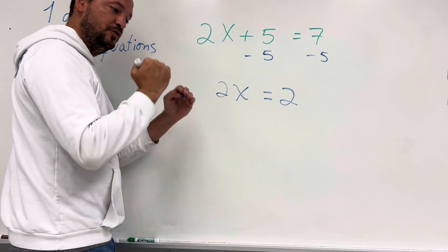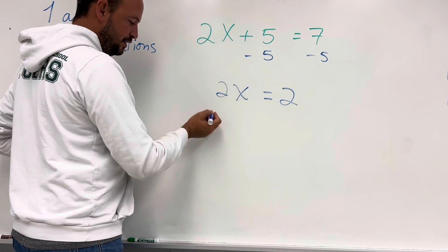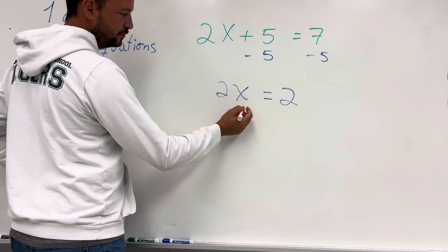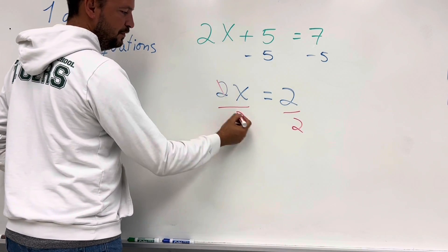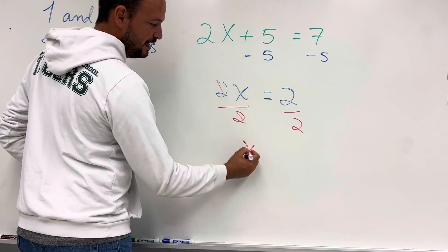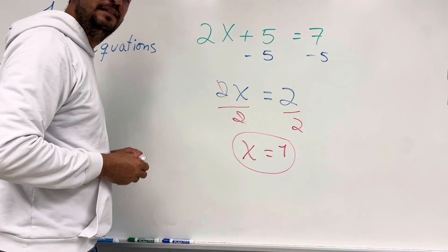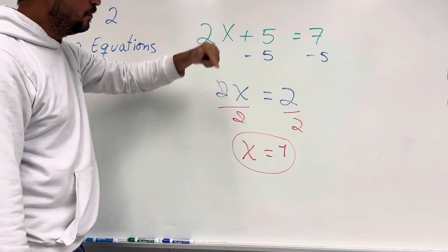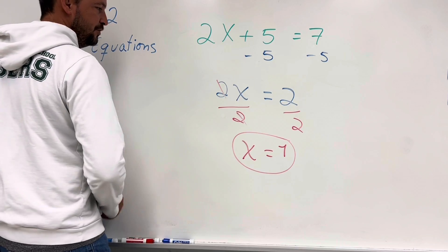Now that we've done the first step, it becomes a one-step equation. The next step is to divide by 2 on both sides. That simplifies to 1 times x, which is x. So x equals 1. We did one step and then another step.